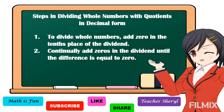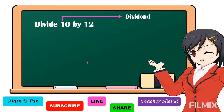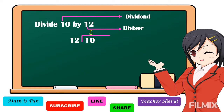Let's study this example: divide 10 by 12. Here, 10 is the dividend and 12 is the divisor. To get the quotient, we write it in division format. Since 10 is smaller than 12, we're expecting a decimal answer. 10 divided by 12 cannot be done, so we put zero. Zero times 12 is equal to zero, and 10 minus zero is equal to 10.